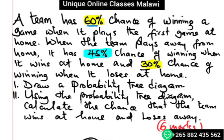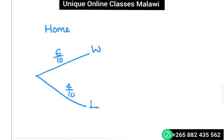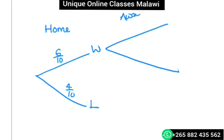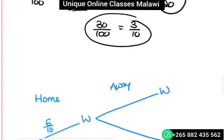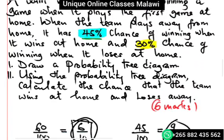When the team plays away from home, it has 45 percent chance of winning. When it wins at home, they would be going to play away. So this is the away one. We have winning and losing.